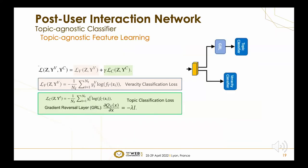Here is the topic-agnostic classification module. Apart from the veracity classifier, we also use a topic classifier with a gradient reversal layer to enforce the feature extractor to learn topic-agnostic features. This can be considered as an adversarial process: the topic classifier attempts to classify news topics, while the feature extractor attempts to learn topic-agnostic features. As a result, the classifier is less prone to overfitting on topics and achieves better generalization.